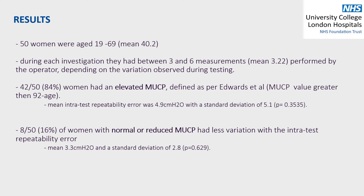Results: The mean age of the 50 women included in the review was 42 years at the time of the investigation. During each investigation, they had between three and six measurements performed by the operator depending on the variation observed during the test. 42 of the 50 women had an elevated MUCP, defined by Edwards as an MUCP value greater than 92 minus age.